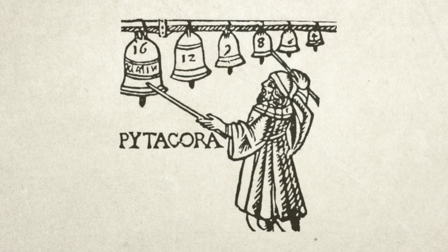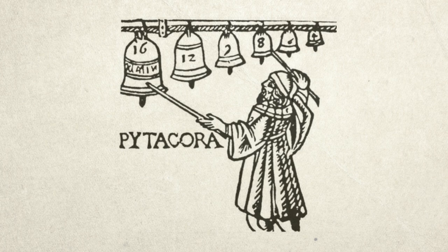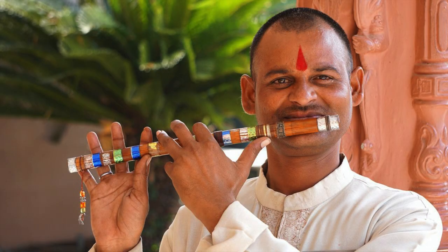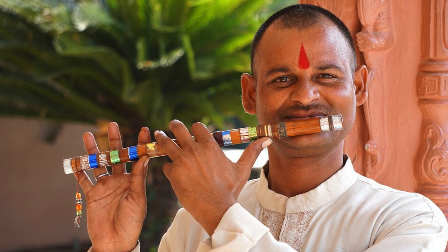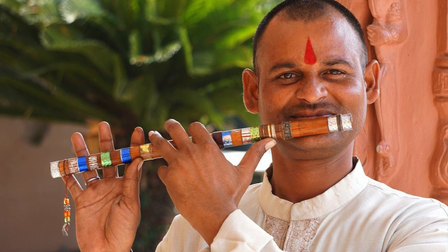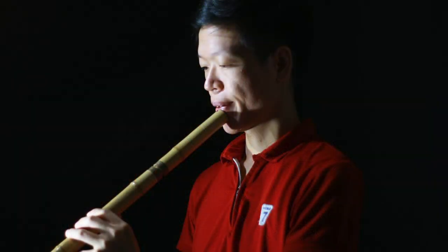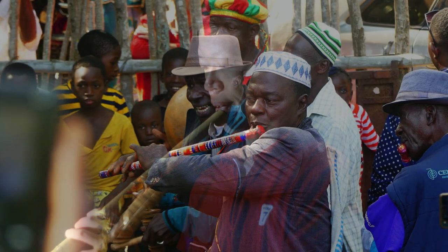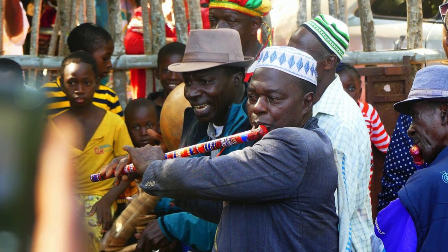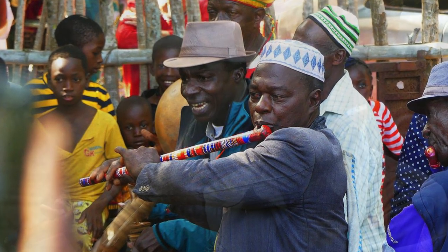The ancient Greeks were the first to have discovered and articulated a need for temperament. However, other forms of music evolved alongside tempered music, without recognizing any such need. Music we might describe as indigenous or native is usually untempered, and every bit is beautiful, in some ways, maybe more so.